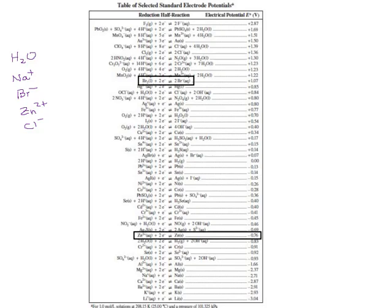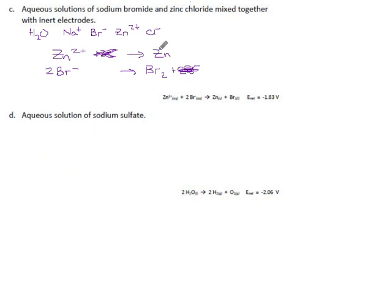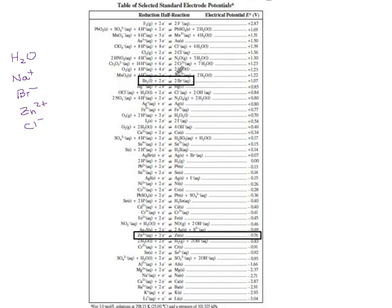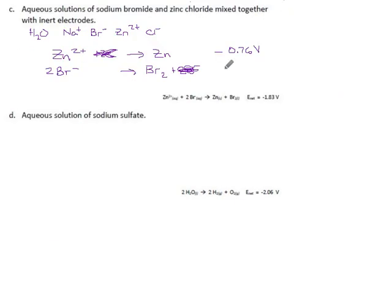For zinc, as written, it's -0.76 volts. For bromine, as written, it's 1.07 volts, but we're going the other way. We're starting with bromide ions and going to the left. Flipped reaction means flipped voltage: -1.07 volts.